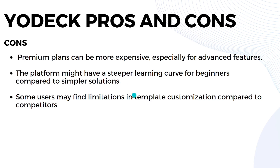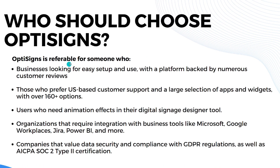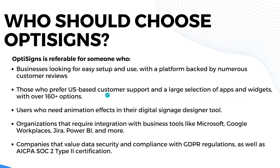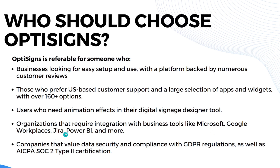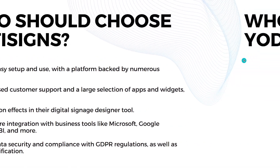Let's discuss who should choose OptiSigns. It is preferable for businesses looking for easy setup with a platform backed by numerous customer reviews, and for those who prefer US-based customer support. It suits users who need over 160 apps and widgets, animation effects in their signage design tool, and integration with business tools like Microsoft, Google Workspace, Jira, and Power BI. It is also great for companies that value data security and compliance with GDPR regulations as well as AICPA SOC 2 Type 2 certification.